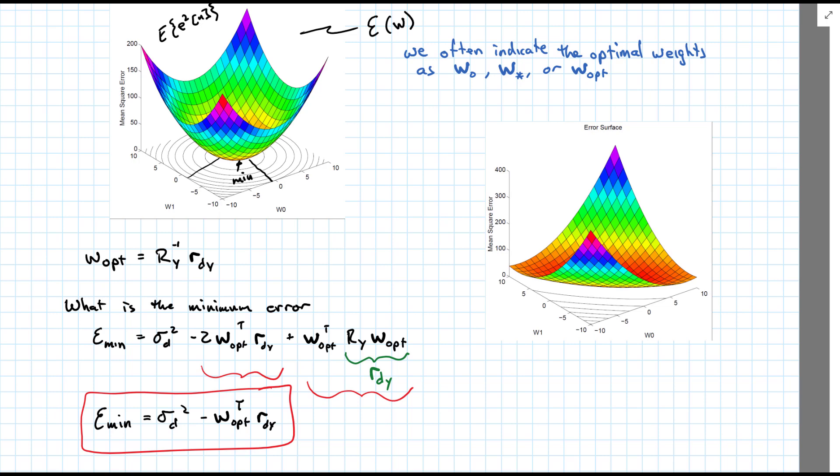and the other one looks like a long glacier valley or something. The shape of that is determined by r_y, the autocorrelation of y. So,